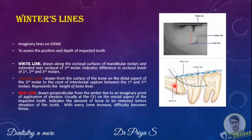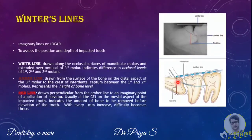The red line is an imaginary line drawn perpendicular from the amber line to an imaginary point of application of an elevator. Usually this point is the cemento-enamel junction on the mesial aspect of the impacted tooth, unless it is a distal angular impacted tooth, where the application point is the distal cemento-enamel junction. The red line indicates the amount of bone that will have to be removed before elevation of the tooth, that is, the depth of the tooth in the jaw.